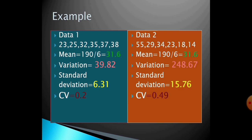The variance of data set 1 is 39.82, the standard deviation is 6.31, and the coefficient of variation is 20 percent. Whereas in data set 2, even though the mean is the same, the variance is 248.67, the standard deviation is 15.76, and the coefficient of variation is 49 percent. Even though the means are the same, the standard deviation and coefficient of variation are very different. In data set 1 the spread is low, while in data set 2 the spread is very broad.